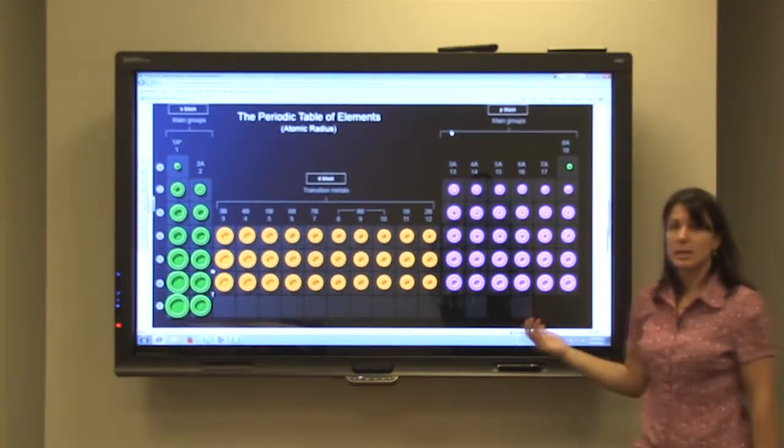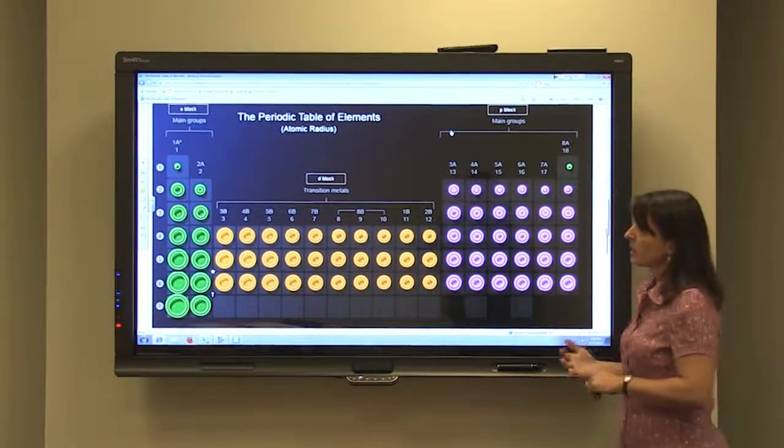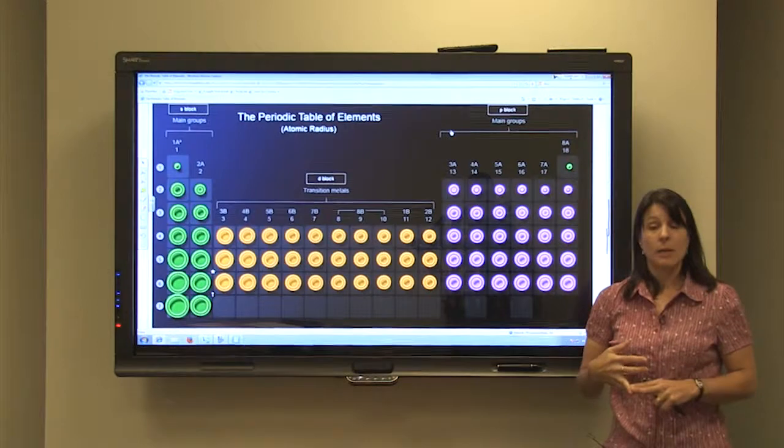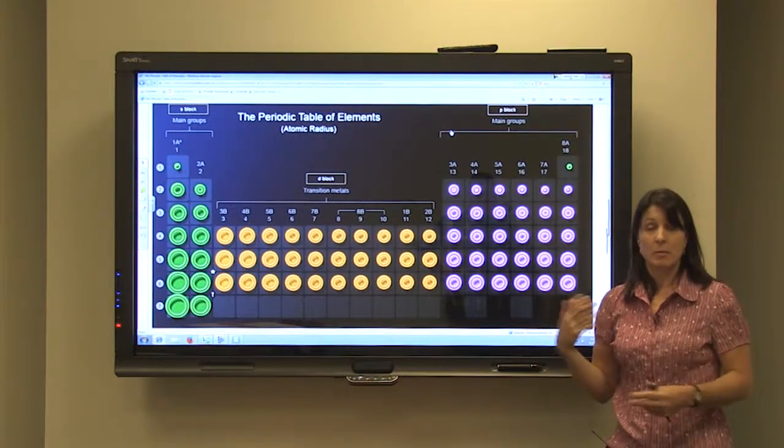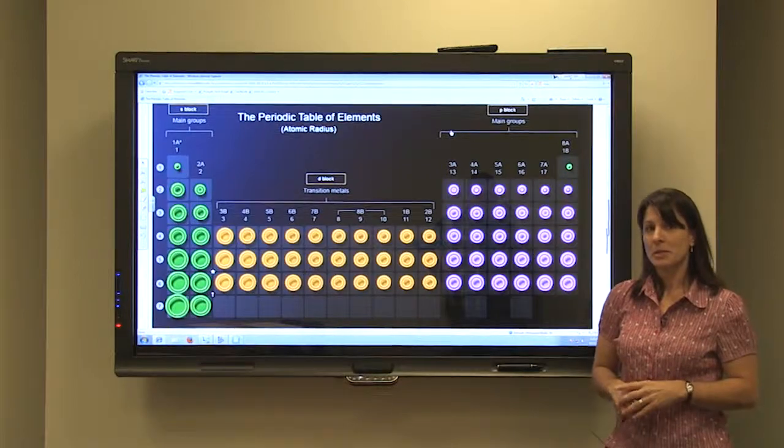So we can use the periodic table to identify the number of valence electrons, and we can also use it to compare the metallic character and the atomic radius of atoms on the periodic table.